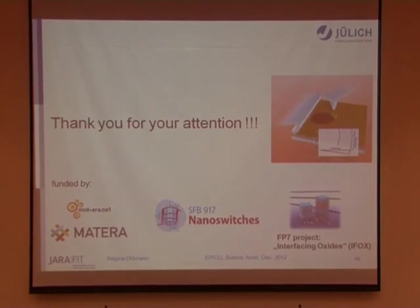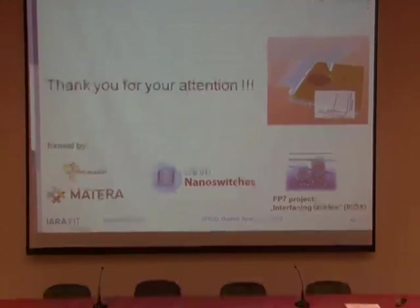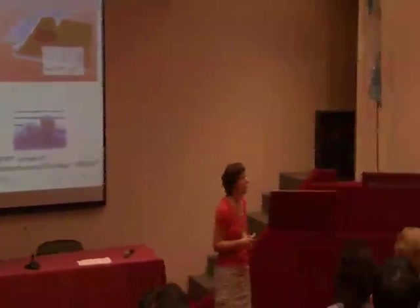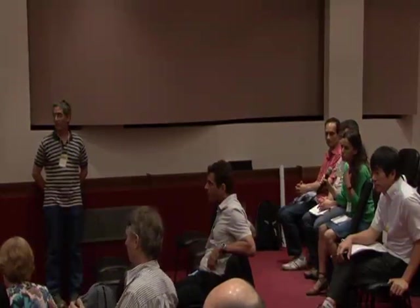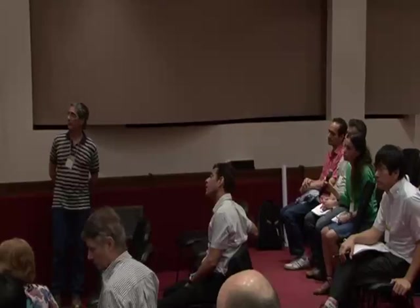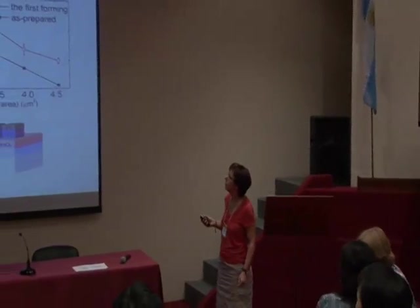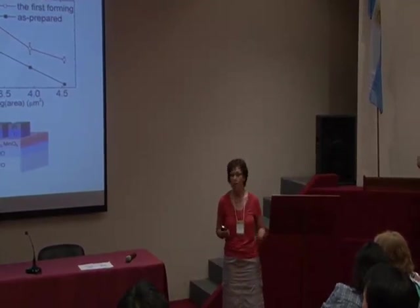Thank you very much for a very interesting and nice talk. It's open for questions. When you began with PCMO, you said that the first forming at negative polarity was an increase in current, but in the next slide you showed the first forming is a drop of current. Is that right? — The first forming is the drop of current. The first forming is the drop of current, and the input from the second forming step is different.